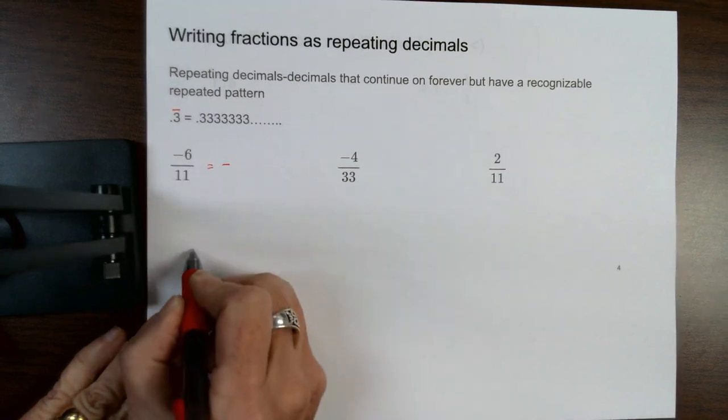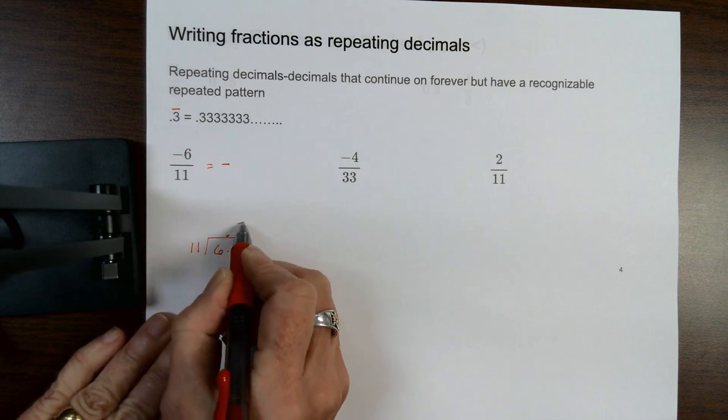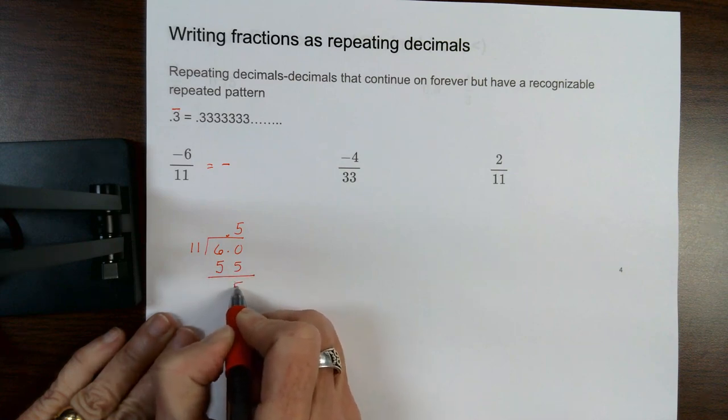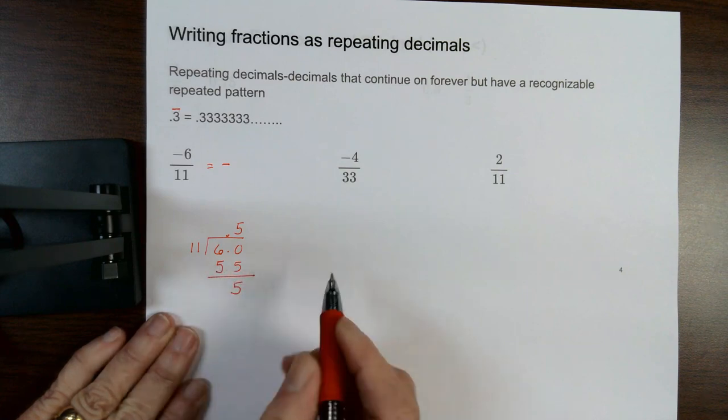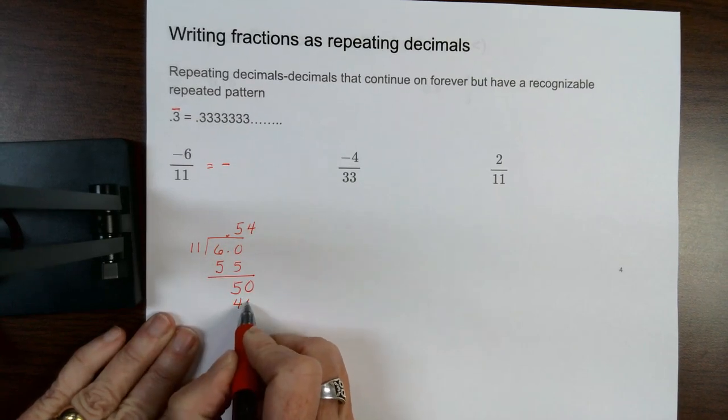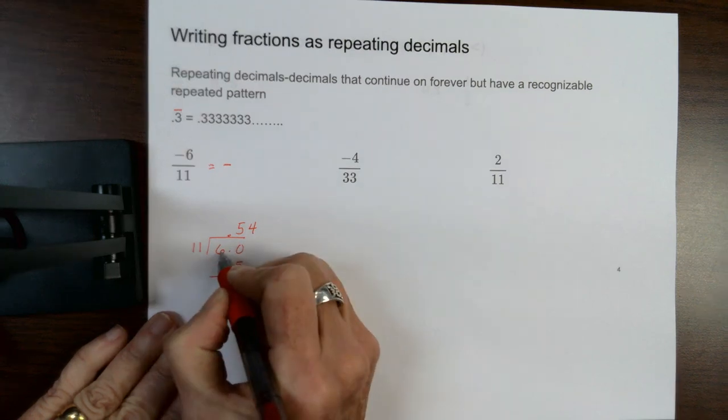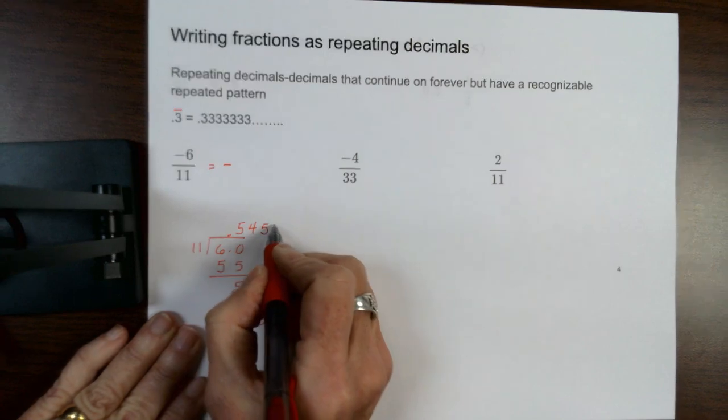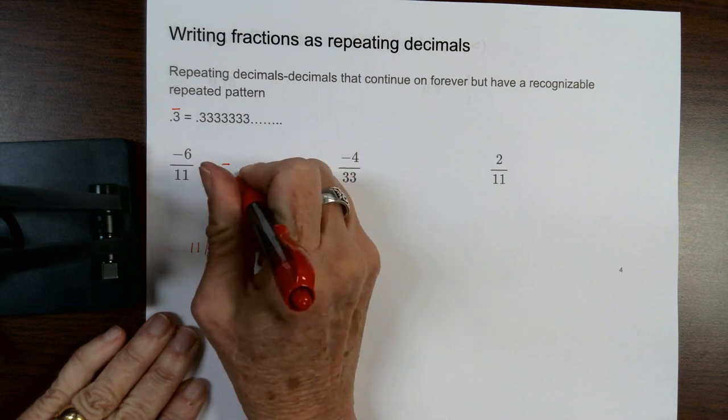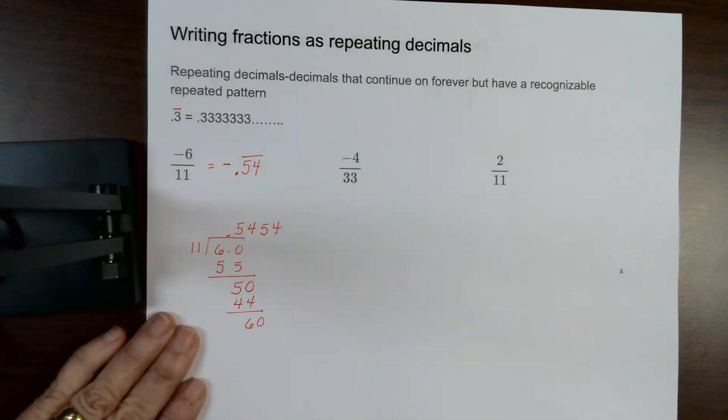Notice that's a negative. So I'm going to go 11 into 6. It's going to go 5 times which is going to be 55. And when I subtract notice I'm going to get a 5. Goes 4 times. Going to get a 6. And now I'm back to where I was before. So I could keep going. And you would keep having 0.545454. So you're going to put 0.54 with a line over it because that shows that repeats.